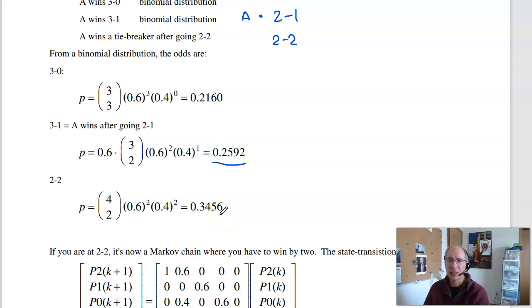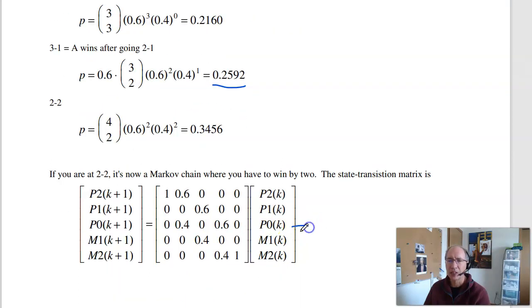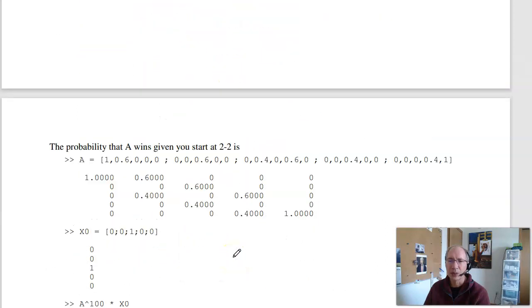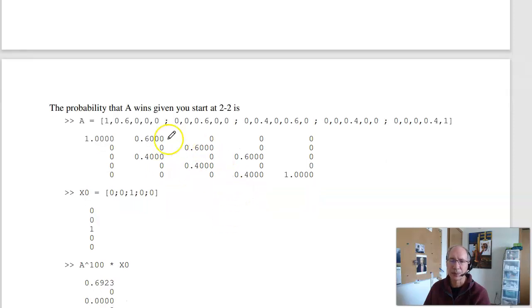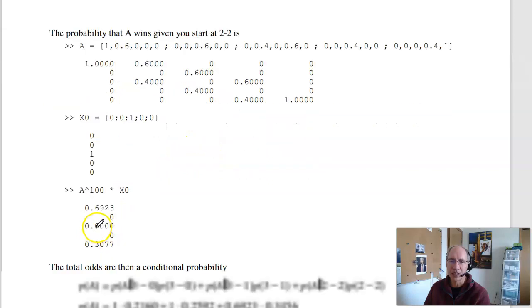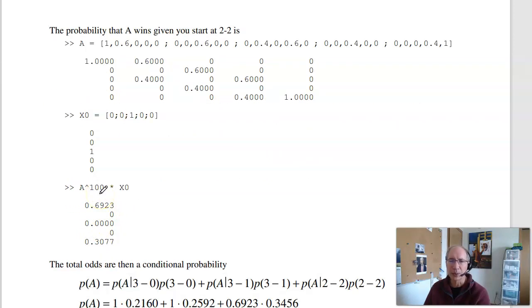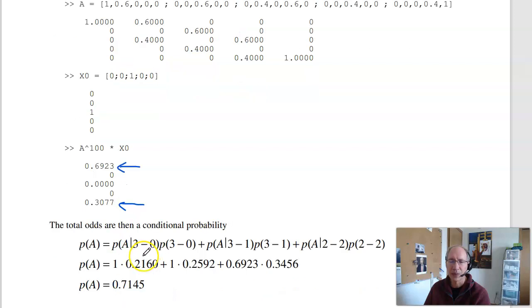Once you get to deuce, it goes into a Markov chain. I start out at even, 2 and 2. 60% chance A wins, go to plus 1. 40% chance B wins, go to minus 1. If I get to plus 2, the match is over, A wins. Go to minus 2, the match is over, B wins. So, what I want to know is, what's the probability that A wins if you go into match play. So here's your state transition matrix. I start out at even. Let's just take A to a large number. After 100 rounds, 69% chance that A wins the match, 30% chance B wins the match.